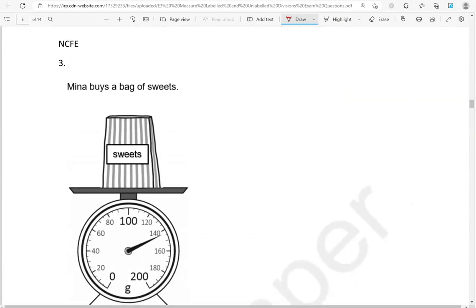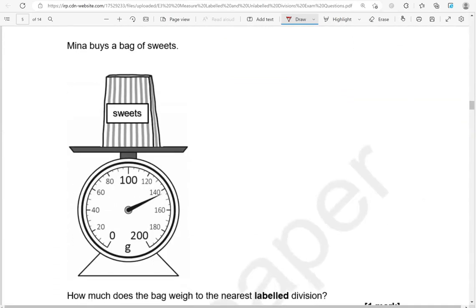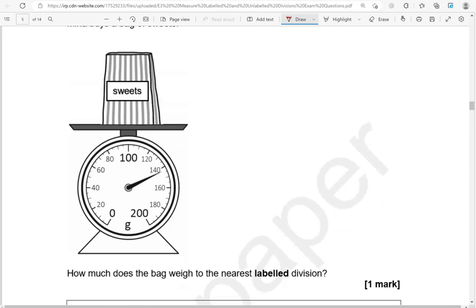Mina buys a bag of sweets. How much does the bag weigh to the nearest labeled division? That's in between 140 and 160, and it's closer to 140 grams.